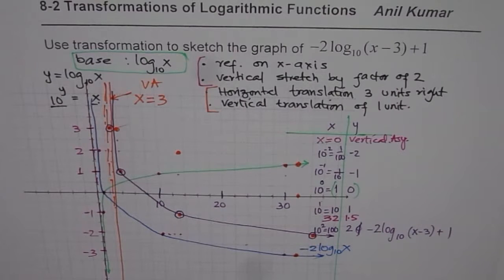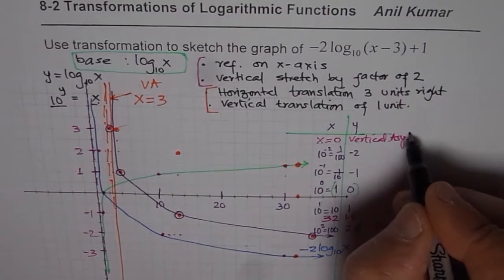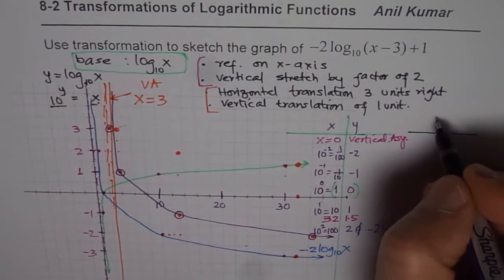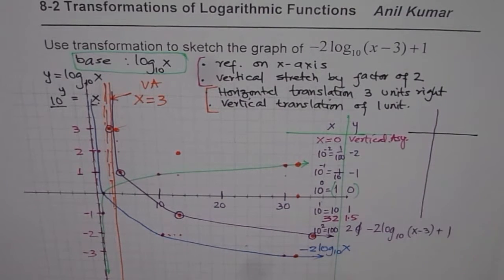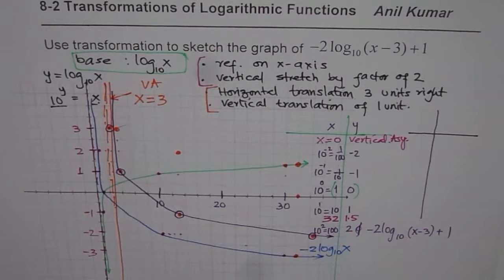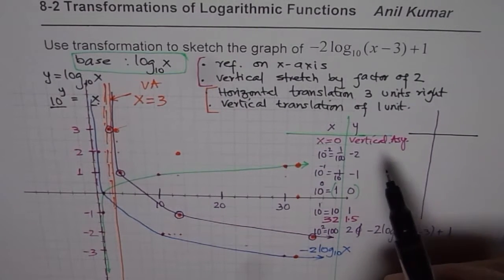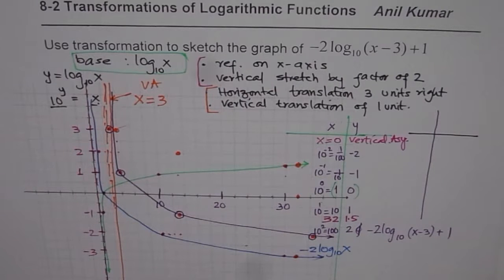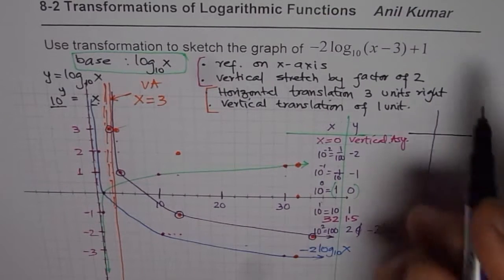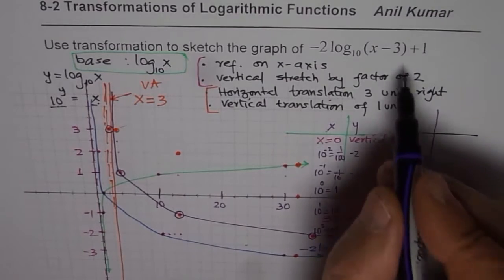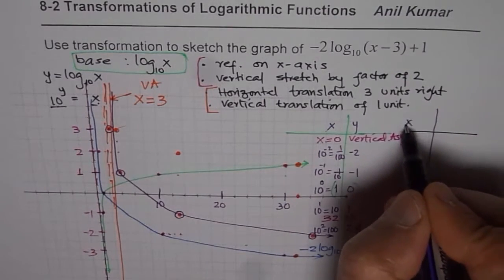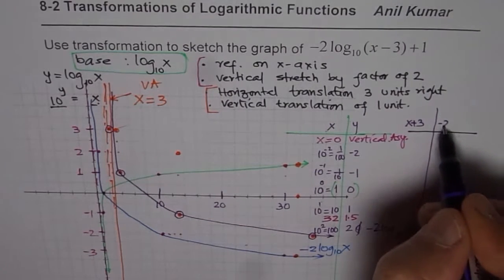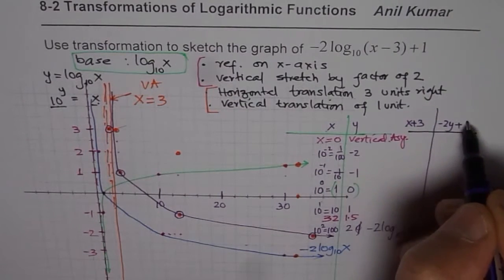We could also transform the key points directly and plot them to get the graph. The x values get 3 added to them, and the y values become minus 2 times the original y value plus 1.